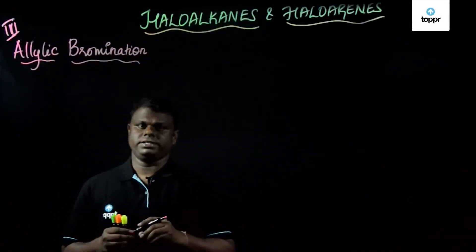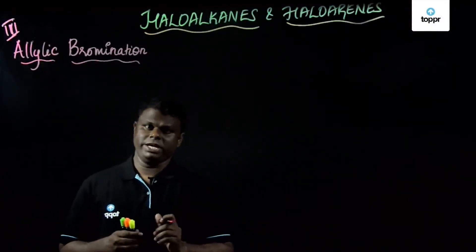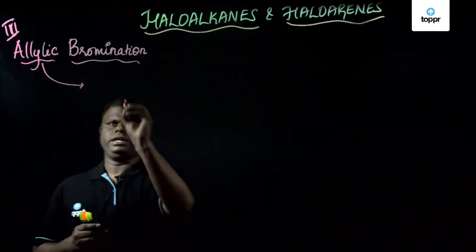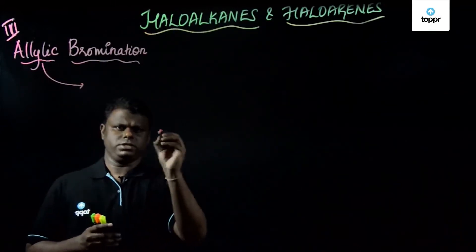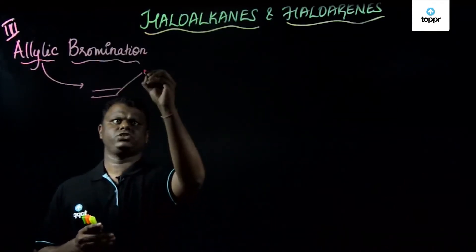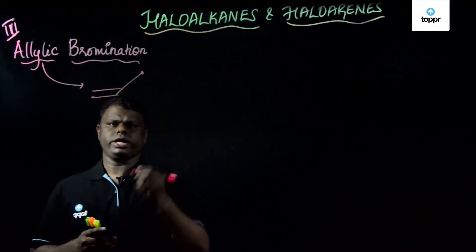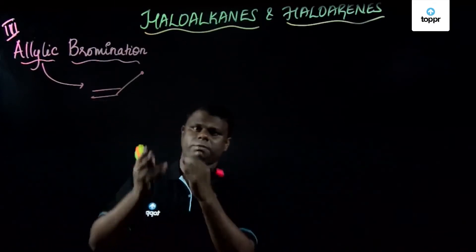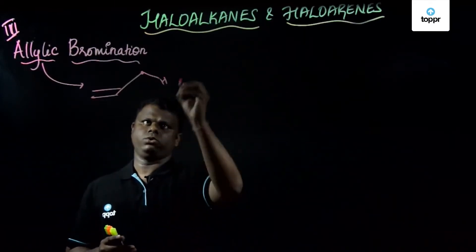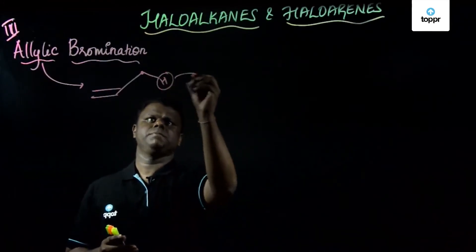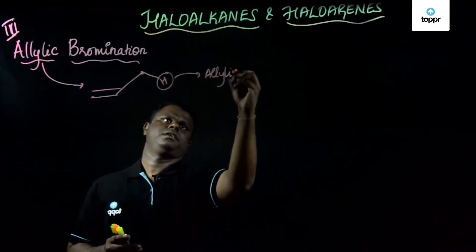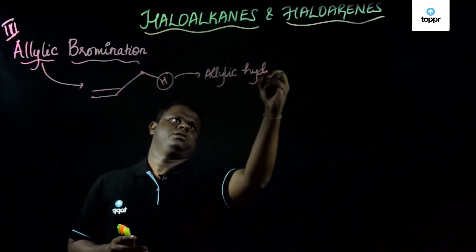Let's move on to the next part, which is allylic bromination. We already know that allylic carbon is basically a double-bonded sp2 carbon when it is attached to an sp3 carbon. The hydrogen on that sp3 carbon adjacent to the double bond is called an allylic hydrogen.